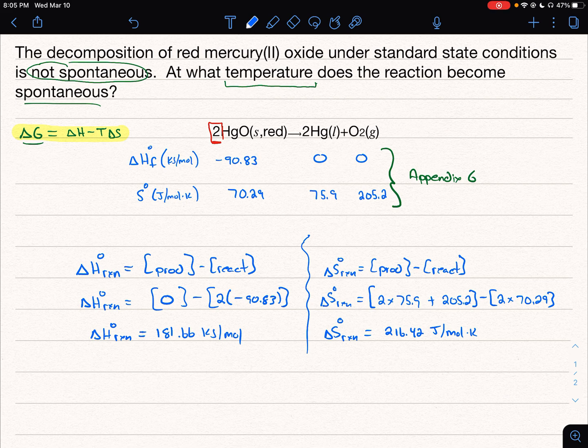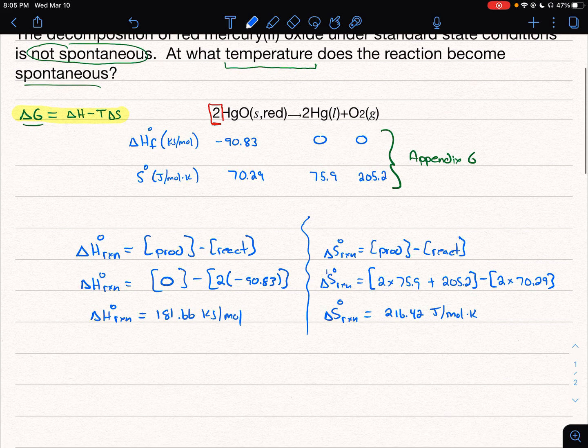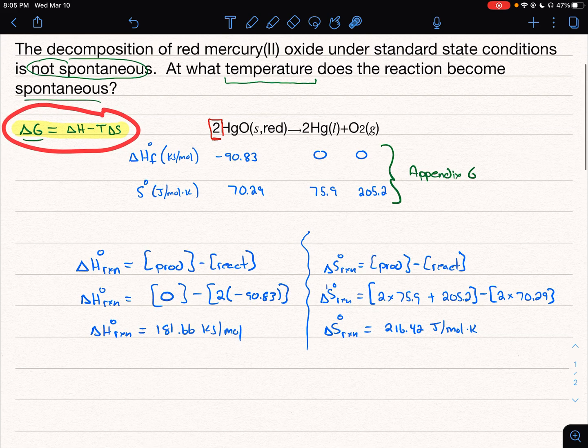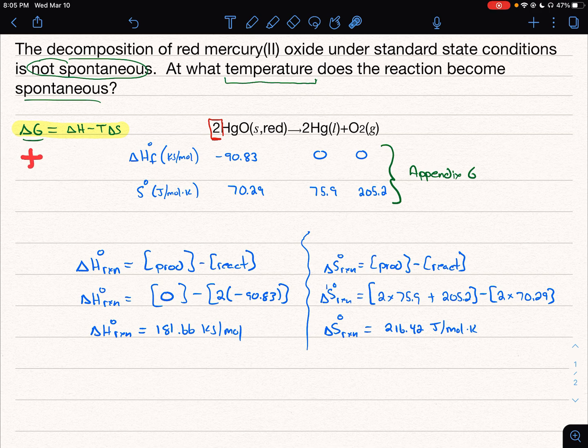Now, that's the first part of the problem. Now we have to come back to our delta G equation here. And what we're told is, under standard conditions, we're going to get a positive delta G. And the question is asking, at what temperature does the reaction end up becoming a negative delta G? So if we put 298 in for T, we should get a positive delta G. And the question is, when does T switch to become a negative value?